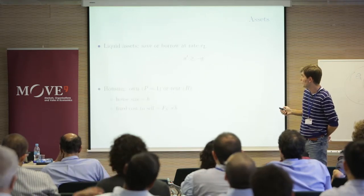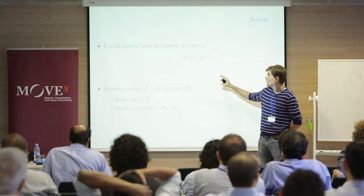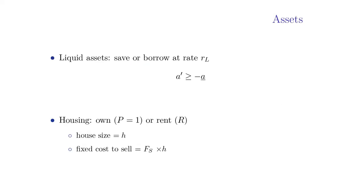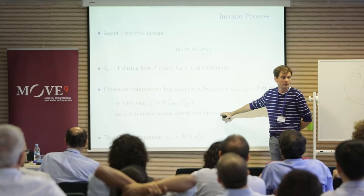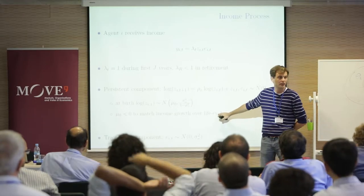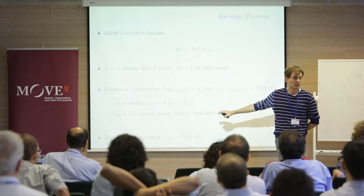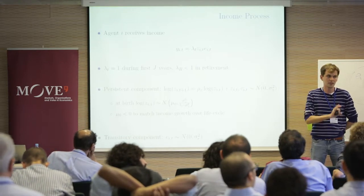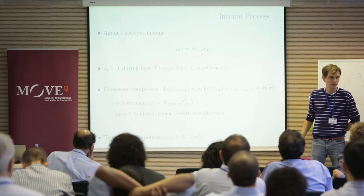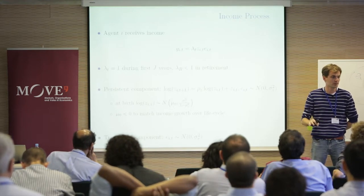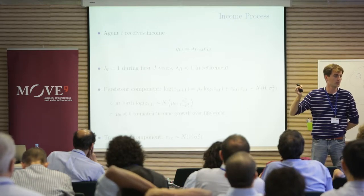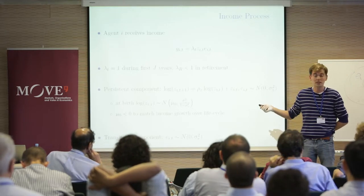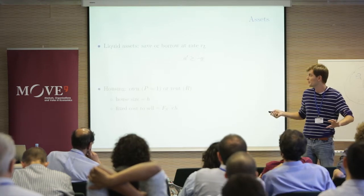We also allow households to save or borrow using liquid assets. Regarding the income process: the initial draw of the persistent component is from the stationary distribution. The variance of the income process does not increase with age — we have evidence from PSID data that the variance for older and younger workers is about the same, though I acknowledge this seems surprising and is worth checking robustly.